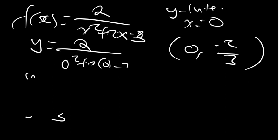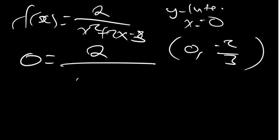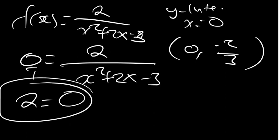How do we find the x intercept now? Set y equal to 0. So we have 0 is equal to 2 over x squared plus 2x minus 3. We cross multiply and get 2 is equal to 0 times everything, which gives 0. This equation doesn't have an x intercept because plugging y equal to 0 to solve for x yields no solution.